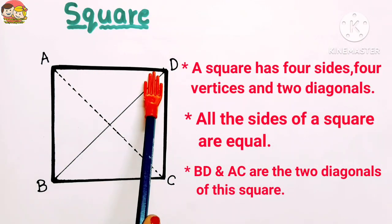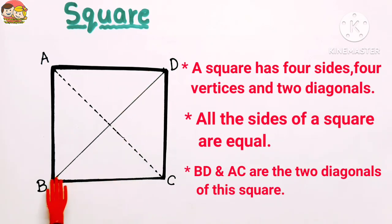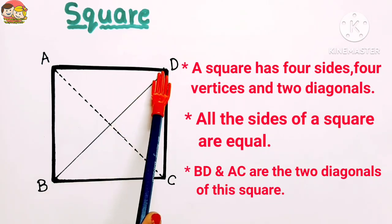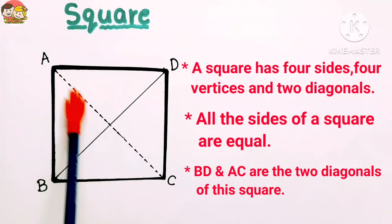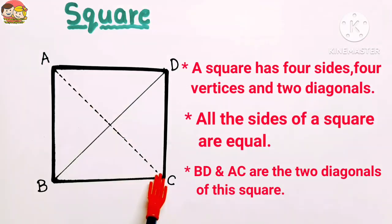BD is a diagonal of this square. BD is the diagonal of this square, and another diagonal of this square is AC.